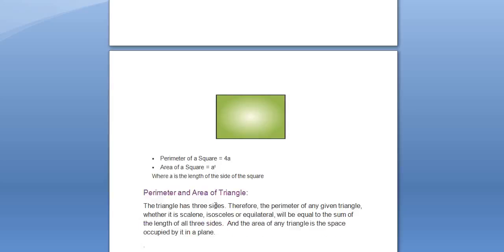Moving on to the triangle. A triangle has 3 sides irrespective of the kind of triangle, whether it is isosceles or equilateral. The perimeter will be equal to the sum of the length of all 3 sides.